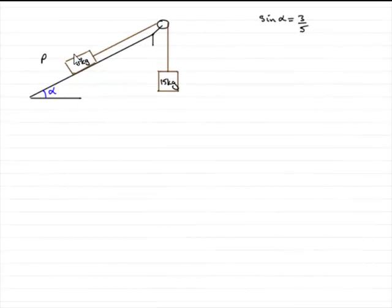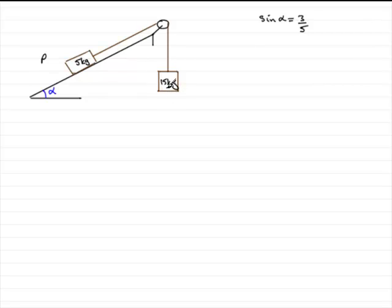In this question, I've sketched the diagram and we're going to put on the forces acting on the particles and mark on the accelerations. The scale pan is marked as 15 kilograms because that's the combined mass of Q and R. So let's put on the forces. We've got the weight acting downwards for the scale pan, so that's 15g newtons, and a tension acting upwards of T newtons. Those are the only forces acting on the 15 kilogram mass.